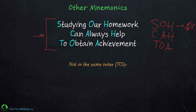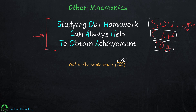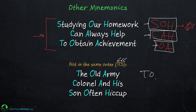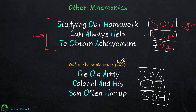Another thing you can do is remember these in a different order. What if we want to do tangent, cosine, and sine in that order? As long as we keep these three-letter blocks together, we're safe. So if you can come up with a sentence in a different order, that's perfectly fine. Here's an example: "The old army colonel and his son often hiccup" — and it spells TOAKASOH. Perfectly fine as long as you keep those three-letter combinations together.